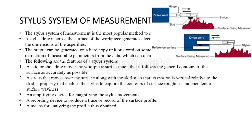Along with that, the stylus system also has an amplifier, which is used for magnification of the signals, and a recorder device to produce a trace or record of the surface profile, along with a means for analyzing the profile thus obtained. This is an example of a stylus system which is generally used to measure the finish of the surface.